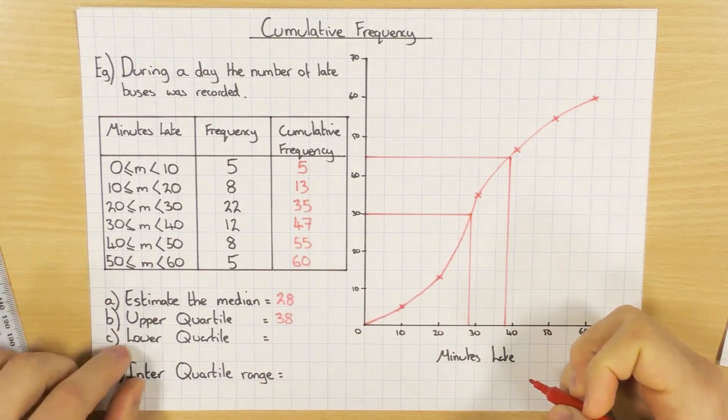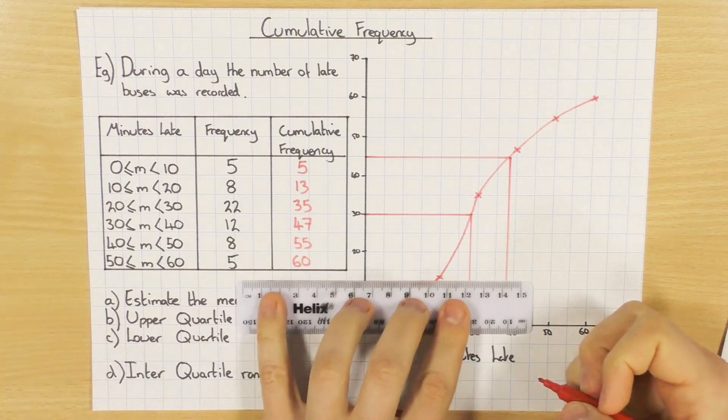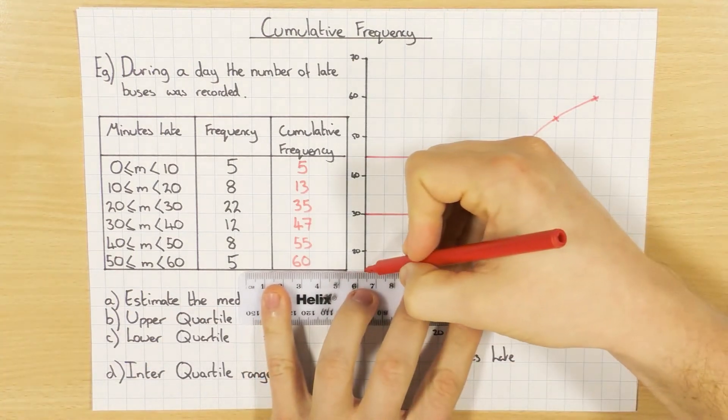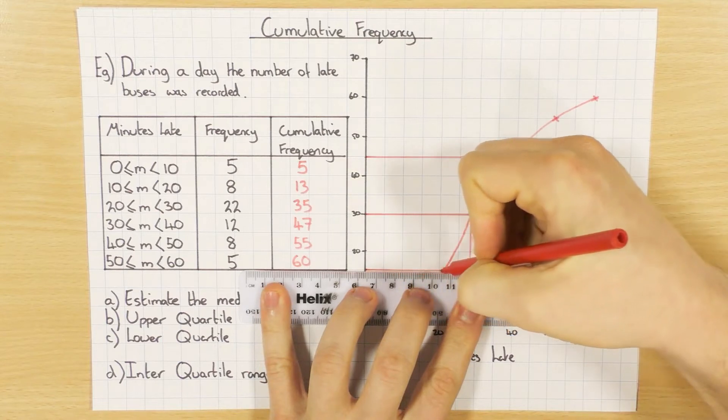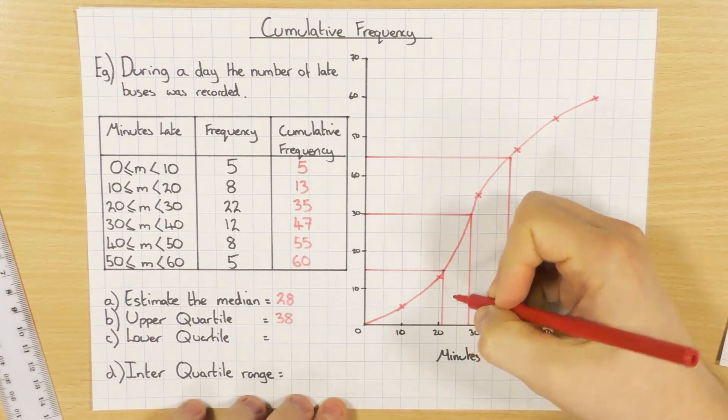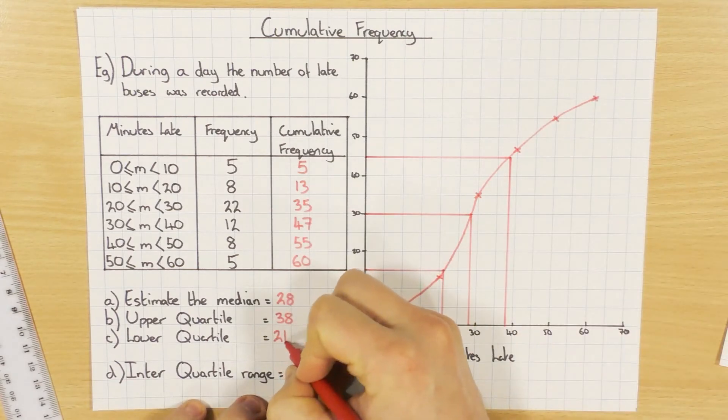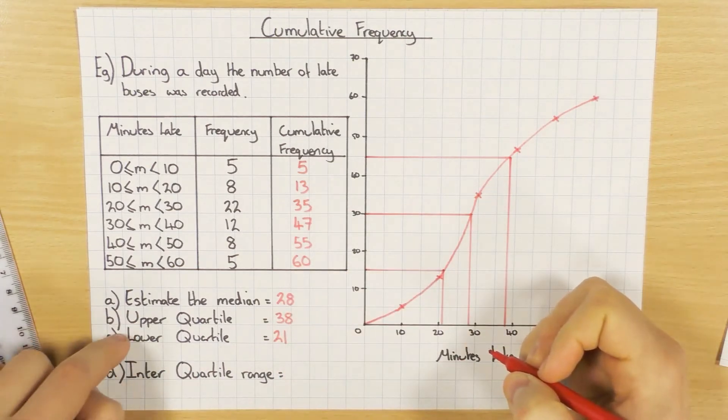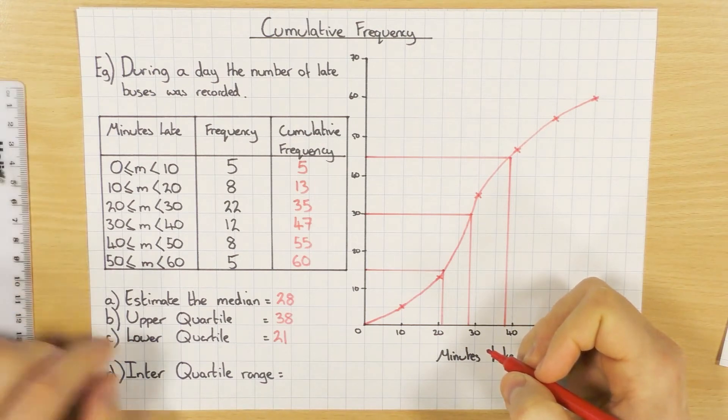And the lower quartile, you might have guessed it. If the upper is 3 quarters, the lower is a quarter. So a quarter of 60 is 15. So there we go. And down, and I'm going to say that's 21. So the upper quartile is 3 quarters. The lower quartile is a quarter.